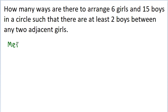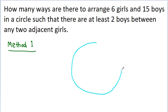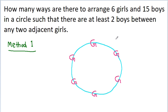Method 1: Let's draw what is going on. We have a circle and we have 6 girls and 15 boys. First, arrange these 6 girls: 1, 2, 3, 4, 5, and 6. Now we have 15 boys and the condition is that there are at least 2 boys between any 2 adjacent girls.